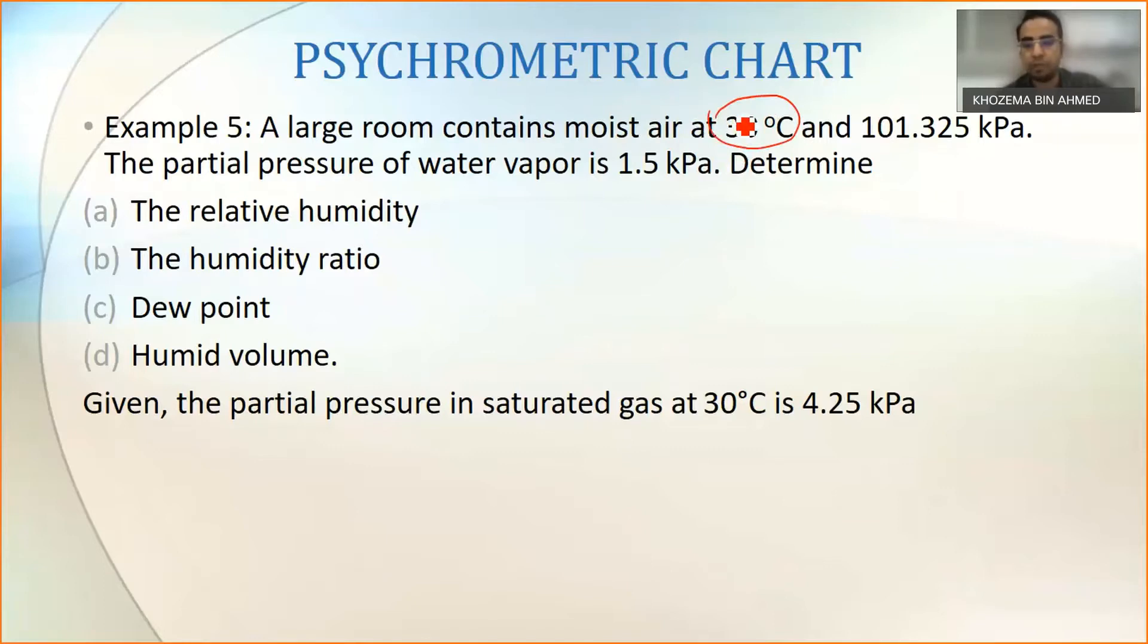If you see, we only have one value here which is our pressure. Let's say that this is our pressure. We're given the partial pressure P_a and also the saturated pressure which is our P_as. Now we have to find a way that can be located in our chart.